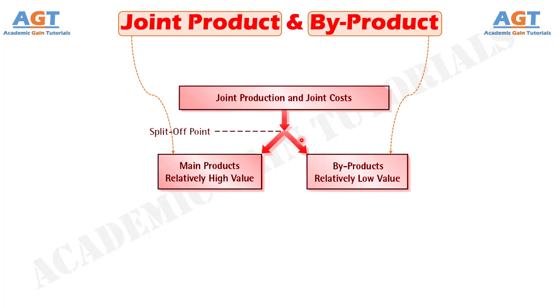So, the main difference between joint product and by-product lies in the fact that whether the company produced the product purposely, or it emerged additionally as a result of ongoing production.